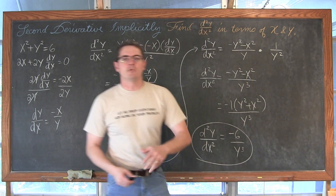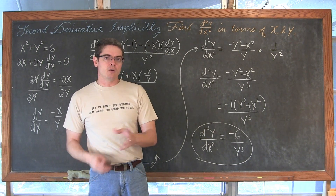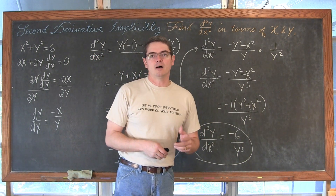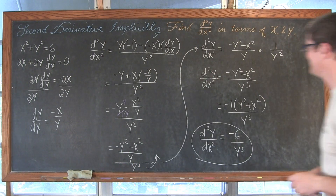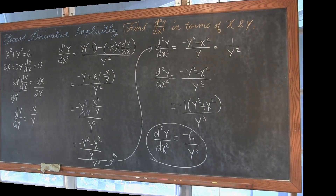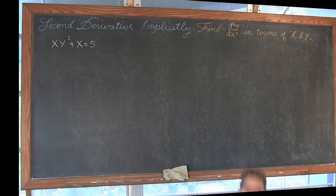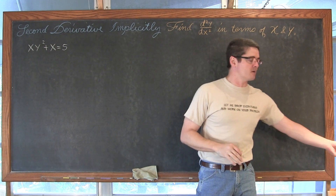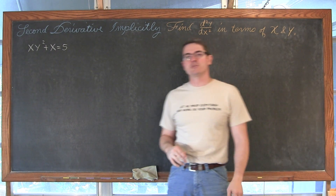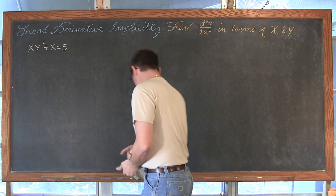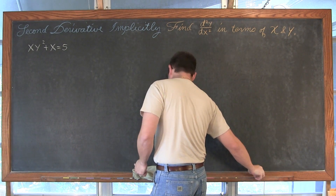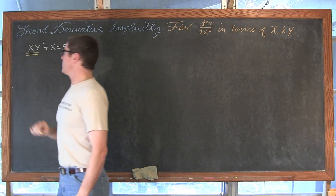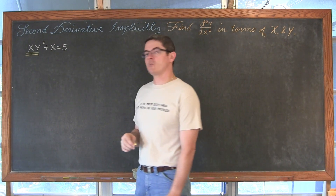Let's take a look at one more example — it is going to be a bit more complicated than this one. For our second and last example we have xy squared plus x equals 5. Let's get the first step done together. We have to use the product rule here because of the xy squared term.